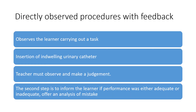Direct observation of procedures with feedback involves observing the learner carrying out a task — for example, insertion of an indwelling urinary catheter, watching somebody do a speculum examination, or how to insert a pessary. These are things we do daily in clinical practice. The teacher must observe, make a judgment, and then give the learner feedback on whether they were adequate or inadequate, offering an analysis of their performance. The teacher tells the learner whether they were competent, and if not, why — and how they can improve.